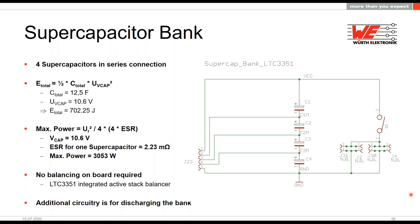Looking more closely at the supercapacitor bank: we put four supercapacitors in series with a working voltage of 10.6V total. This results in a total capacitance of 12.5 farad, a total energy of around 700 joule, and a maximum output power of around 3 kW with an ESR of 2.2 mΩ per supercapacitor. There is no on-board balancing because the Analog IC has an integrated stacked balancer.